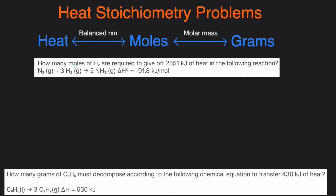In the next example we're asked to solve for the moles of H2 that are required to give off 2,551 kilojoules of heat in this reaction. We have a balanced reaction with a delta H that's given and we're asked to solve for moles — that's an indication this is a heat stoichiometry problem. We start off with the number that's given that's not part of the chemical reaction, which is 2,551 kilojoules, and multiply by the conversion factor.